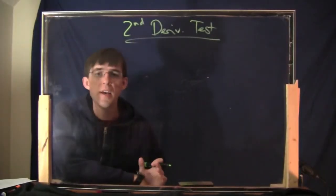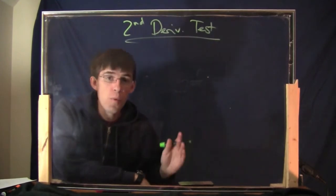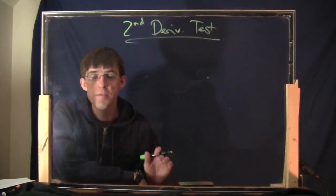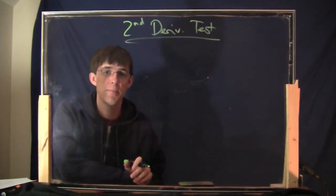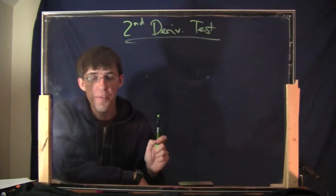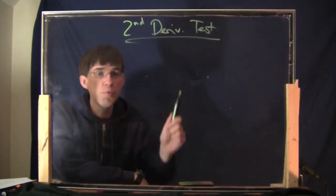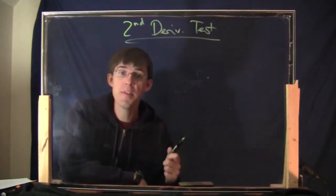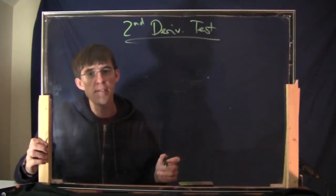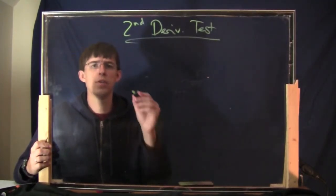All this stuff about concavity — concave up or concave down — you can actually use it as another way of figuring out whether a point is a relative minimum or a relative maximum. This is called the second derivative test. The first derivative test identifies relative extrema, and the second derivative test is another method which is sometimes easier to do.